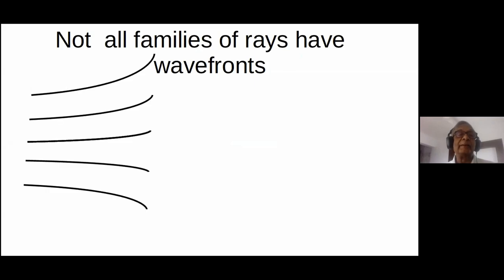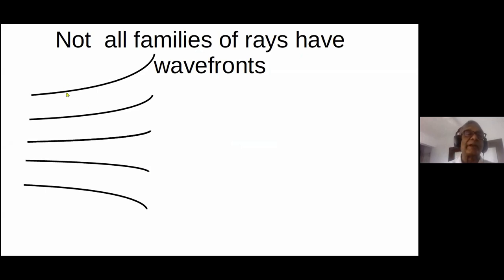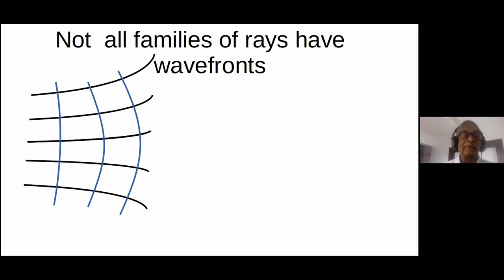Not all families of rays are perpendicular to wavefronts. Here's a bunch of curved rays in a non-uniform medium. Can we construct a wavefront perpendicular to all of them? In two dimensions we can — start from here, go perpendicular, and in calculus you can construct an orthogonal family of curves. However, this works on the plane in X and Y, but we're really interested in waves propagating in three dimensions, and it turns out the case of three dimensions is quite different from two dimensions.